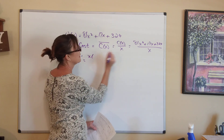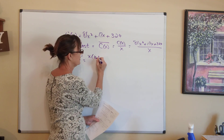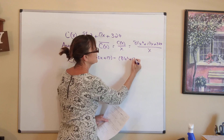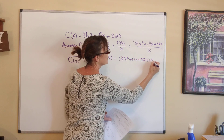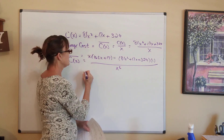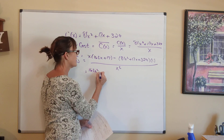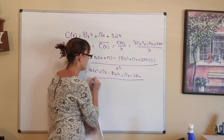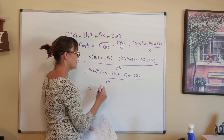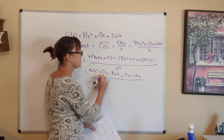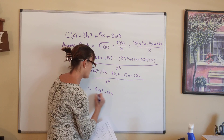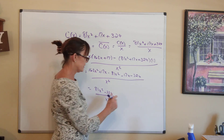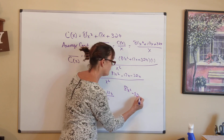Applying the quotient rule: [x(162x + 17) − (81x² + 17x + 324)(1)] / x². Simplifying the numerator: 162x² + 17x − 81x² − 17x − 324, which gives (81x² − 324) / x². Critical values come from setting the numerator equal to zero: 81x² − 324 = 0, or from the denominator x² = 0, giving x = 0.